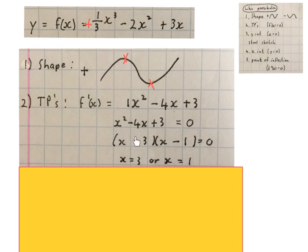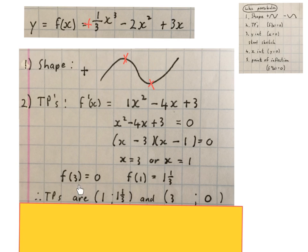Then we substitute this 3 back into the mother equation. And then after that, the 1 back into the mother equation to get their y values. Then I just said, substitute the 3 back in there. You are going to get 0. Substitute the 1 back in there and you are going to get 1 and a third. Then I write my turning points as coordinates. So this is going to be my two coordinates.